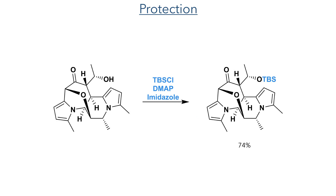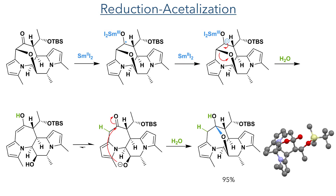The newly formed hydroxyl group was then protected with TBS chloride to prevent it from reacting in the deoxygenation steps. While the bridging ether that formed during the manganese oxidation proved to be quite useful in templating the later reactions, it was formed in the wrong position. To install the correct connectivity for the final product, the researchers carried out a reduction-acetylization sequence.